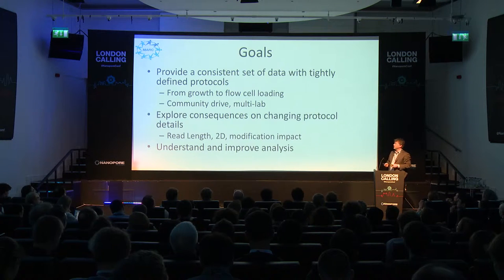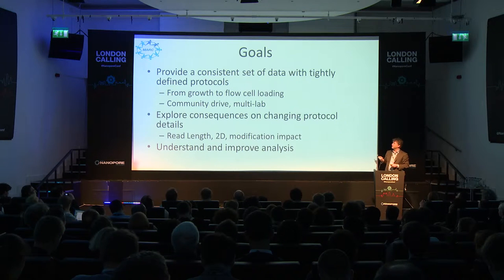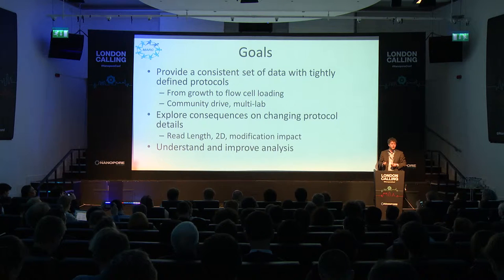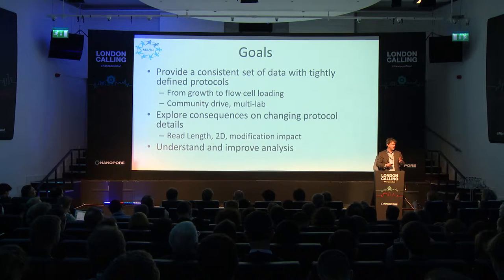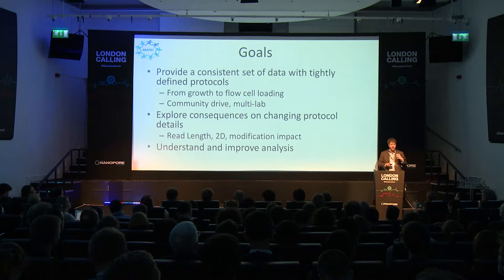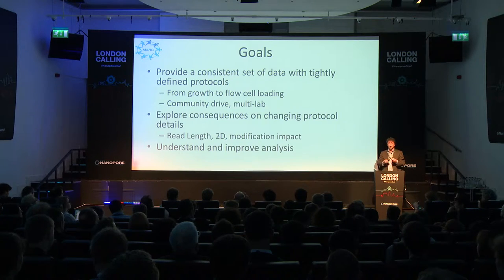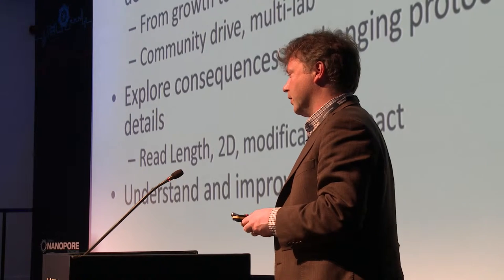So what are we trying to do? The goal of this consortium is to provide a consistent set of data with tightly defined, end-to-end protocols — from the growth to the details about how to load flow cells and other details. The goal is to do this in a multi-lab way so that we understand where the variance is lab-to-lab when we do this.